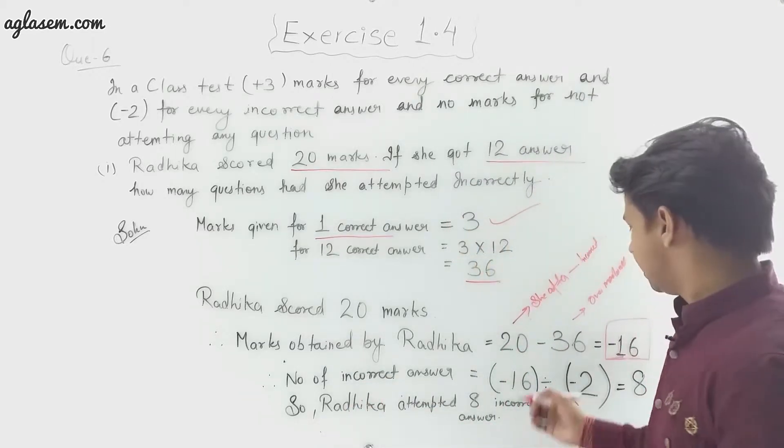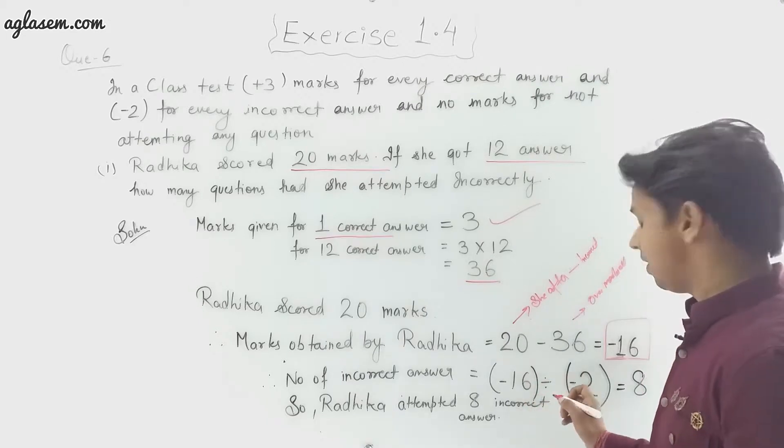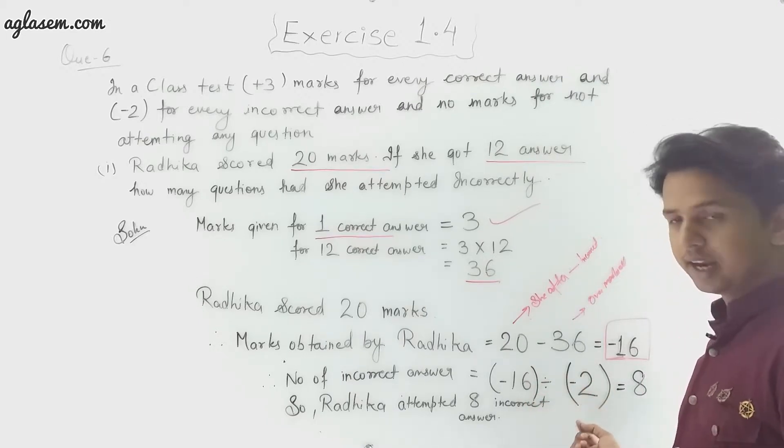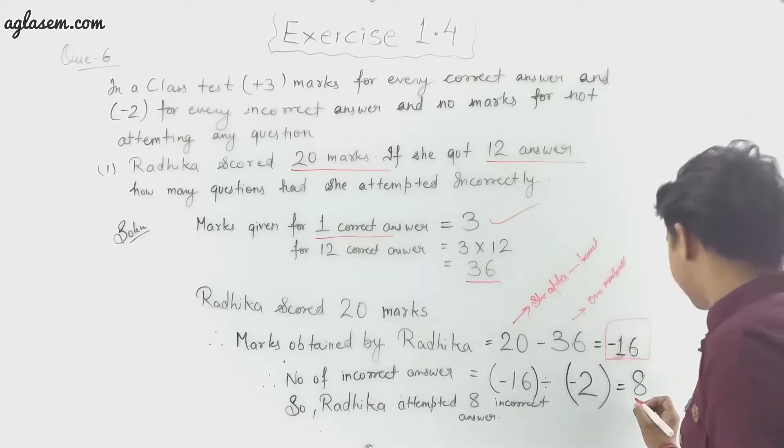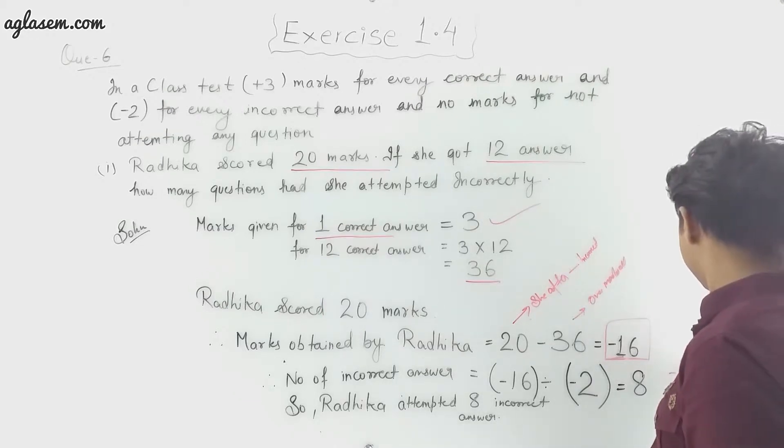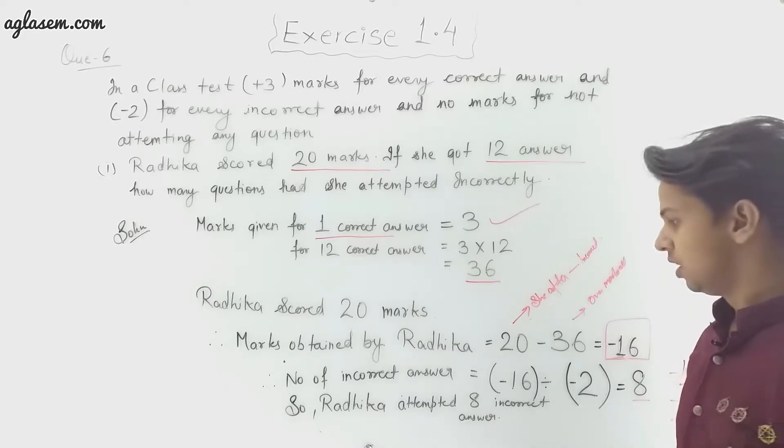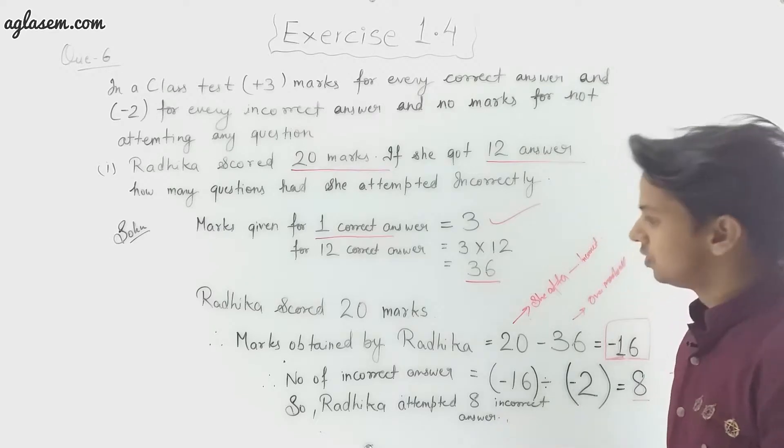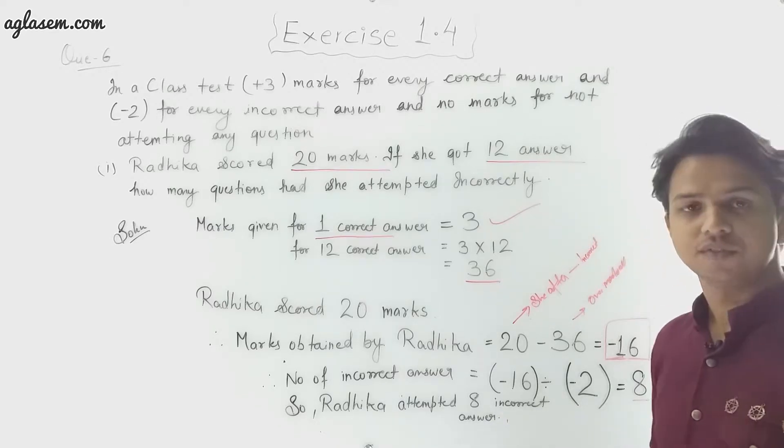So -16 is the marks obtained by incorrect answers. So number of incorrect answers will be -16 ÷ 2 in minus, that is 2 × 1 = 2 and 2 × 8 = 16, and minus minus is plus. So Radhika attempted 8 incorrect answers.